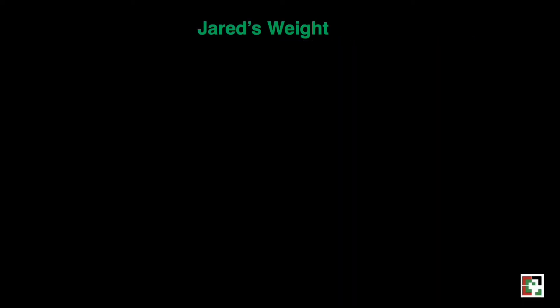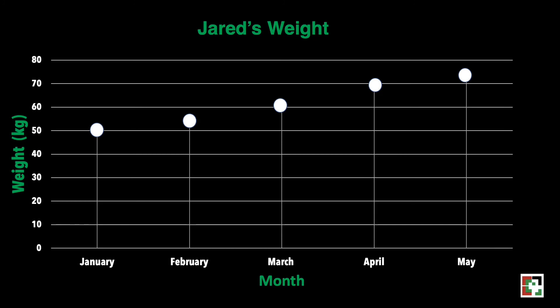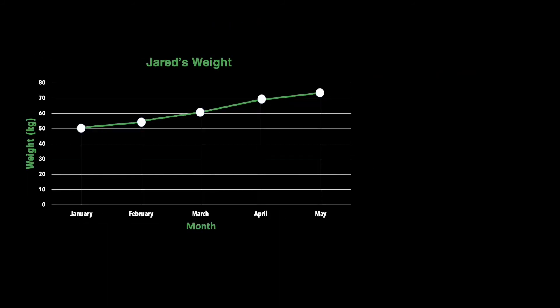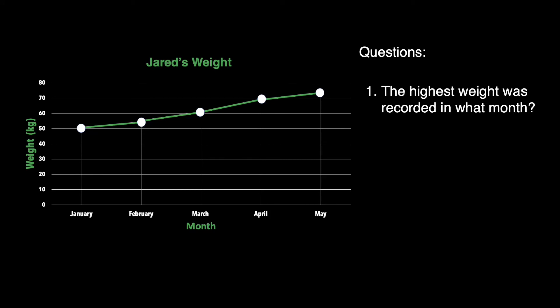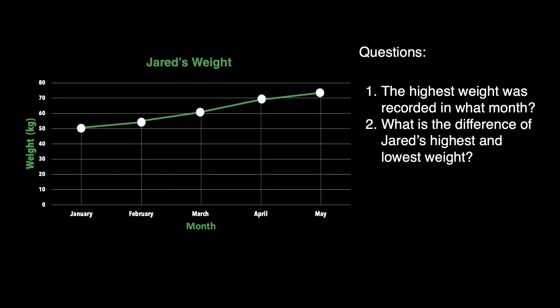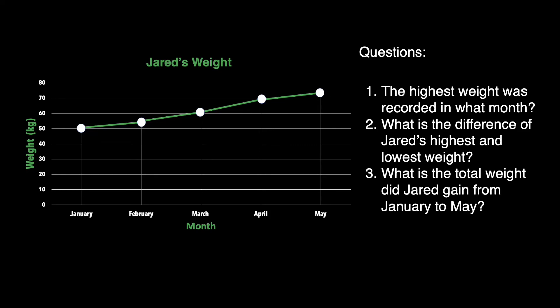Now it is your turn to solve. Please write your answer in the comment section. We have here Jared's weight from January, February, March, April, and May. These are the following questions that we have to answer. First, the highest weight was recorded in what month? Next, what is the difference of Jared's highest and lowest weight? Third, what is the total weight Jared gained from January to May?